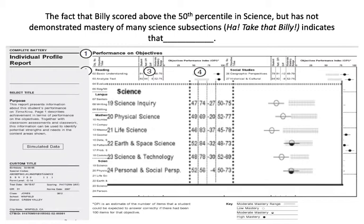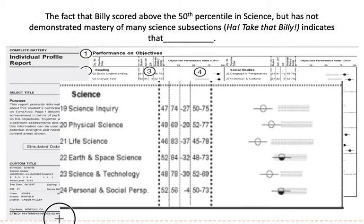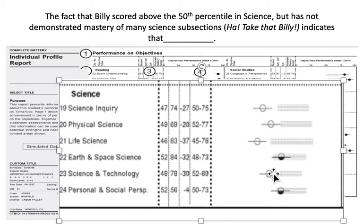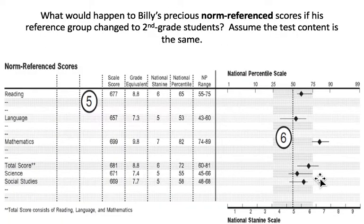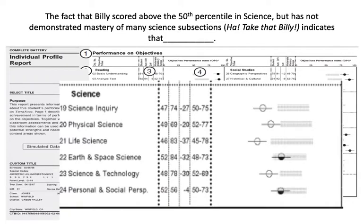If Billy scored above the 50th percentile in science but has not demonstrated mastery of many science subsections, how can that be? Just because you're above average doesn't mean the average group of people is any good. If everybody's not doing well in science and you're above average, you can still not have mastered science but be above average. Similarly, if these are district norms where everyone is achieving really highly, you can be below average and still have mastered everything. You can be a super genius who mastered everything at a high level but still be in the bottom 1% if I'm comparing you to the cream of the crop.